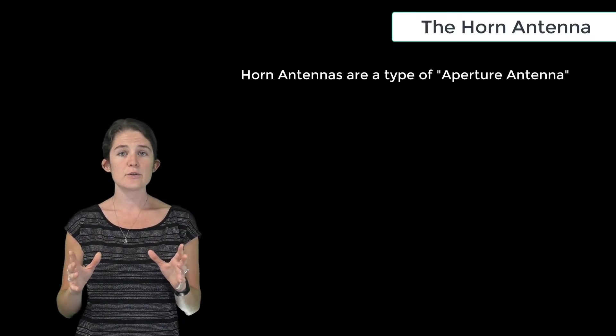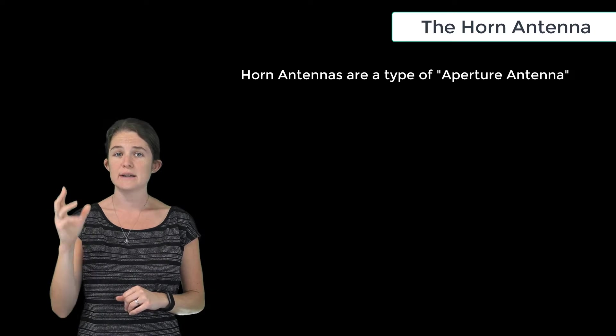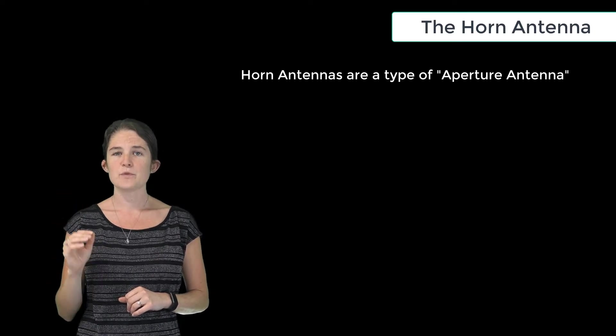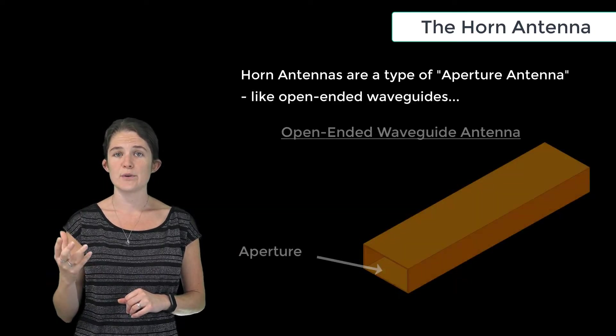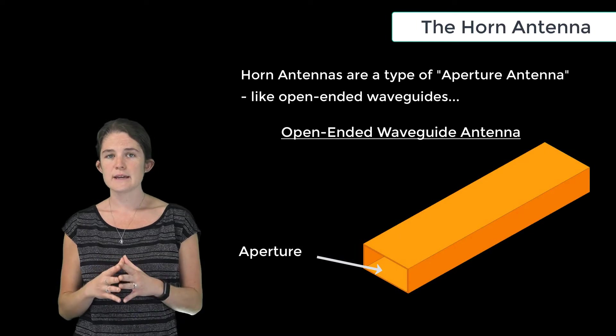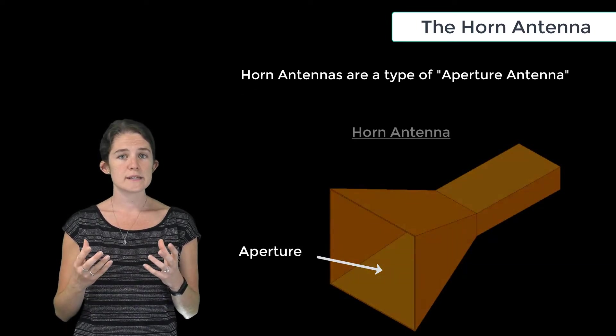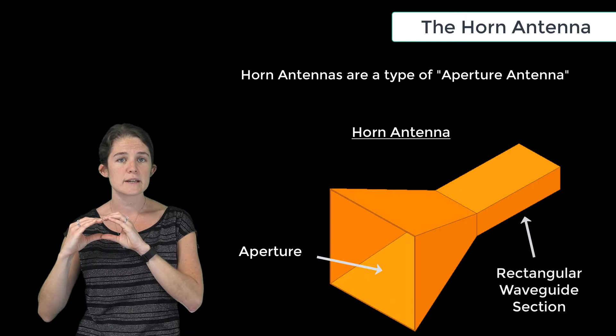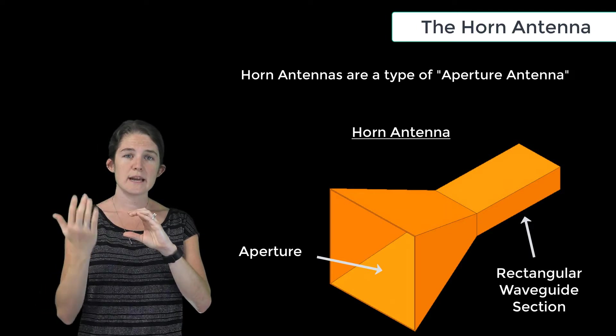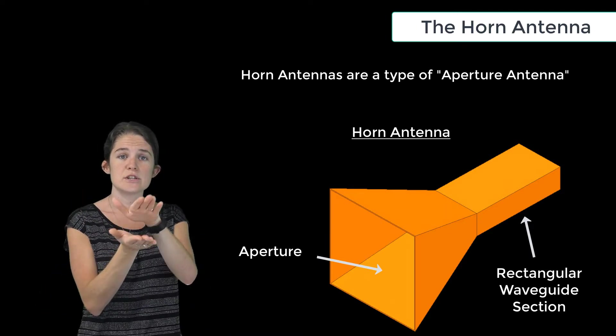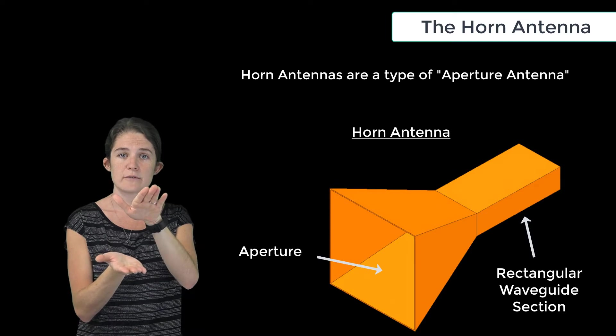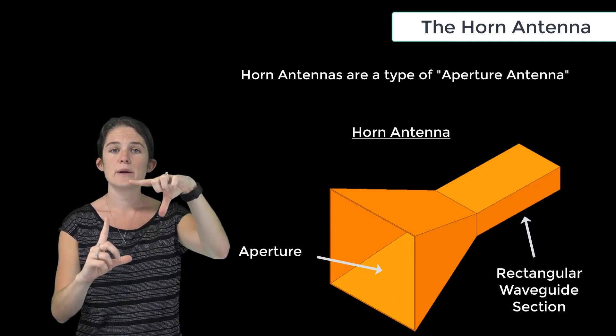Horn antennas belong to a category of antenna sometimes referred to as aperture antennas, which also includes simple open-ended waveguides. Like an open-ended waveguide, a horn antenna is fed via a section of rectangular waveguide, but in the case of the horn antenna, this waveguide section is flared outward at the end of the waveguide and terminates in an open aperture.